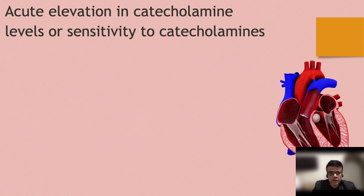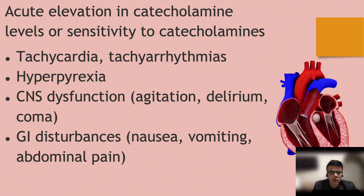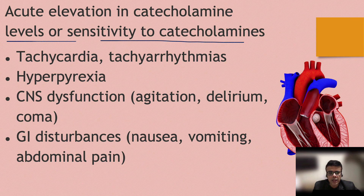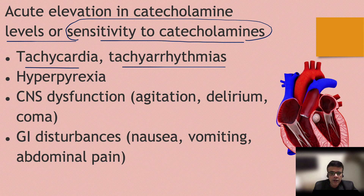In thyroid storm, thyroid hormone synthesis is greatly enhanced, leading to acute elevation in catecholamine levels as well as increased sensitivity to catecholamines. Increased thyroid hormone causes increased release of catecholamines or increased sensitivity to catecholamines — this is the normal action of thyroid hormone, but it is exaggerated in thyroid storm. Because of the increased action of thyroid hormone and catecholamines, tachycardia and tachyarrhythmia occur — these are the most lethal complications that can arise and can even lead to death.